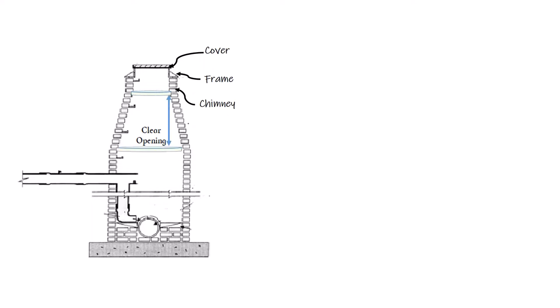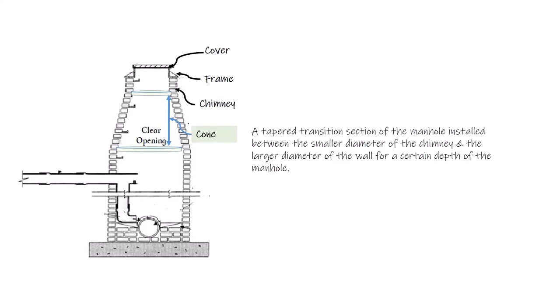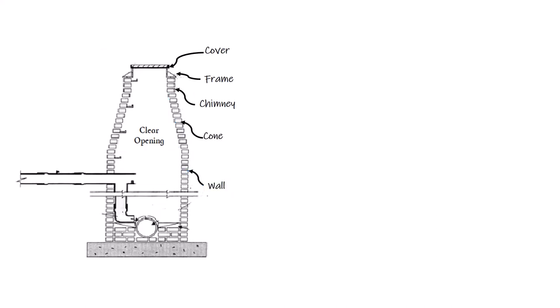Number five: the wall of a manhole. This is the vertical section of the manhole from the cone to the bottom. Number six: the manhole step. These are ladders provided on the inside of the manhole to allow easy access.